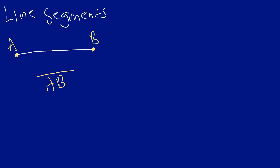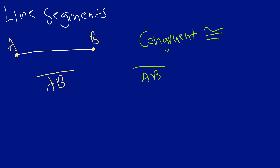One more thing we need to talk about is some different symbols used in geometry. First is the idea of congruent. When something is congruent — here is the symbol for that — it means that the two shapes you are dealing with have the exact same shape and size; they're like twins. So if I say line segment AB is congruent to line segment CD, that means they have the exact same shape and exact same size — they're both lines with the same length.